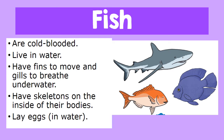The next group of vertebrates are the fish. Fish are cold-blooded. They live in water. They have fins to move and gills to breathe underwater. They have skeletons on the inside of their bodies, and fish lay eggs in water.